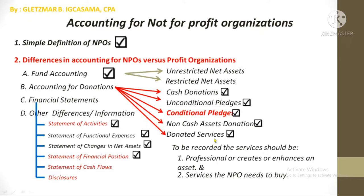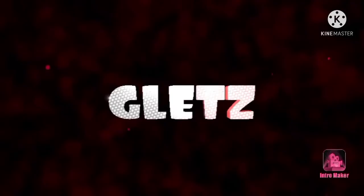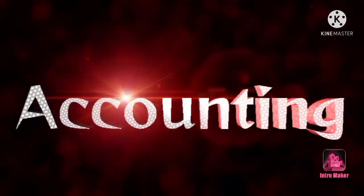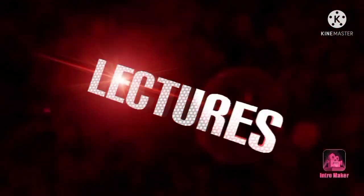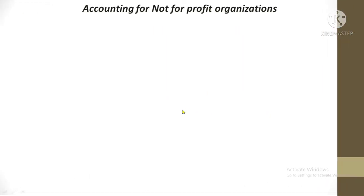Hello guys, we are now on episode 11 of this series. So far we only have three topics remaining: the statement of cash flows, the disclosures for NPOs, and the other information you need to know about NPOs. For those who are new to my channel and to this topic — not-for-profit accounting — please see the previous episodes; their links are in the description below.